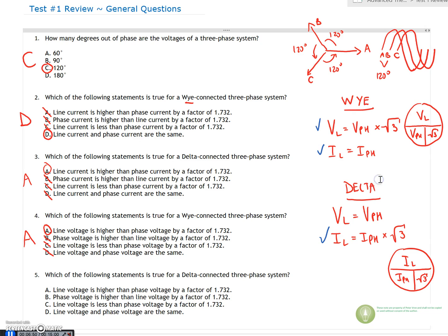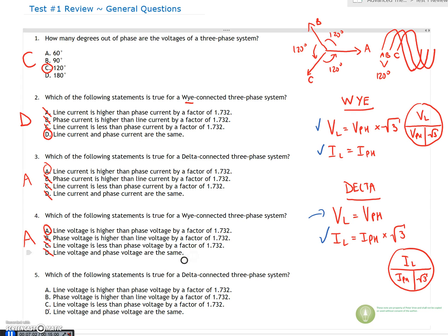The last relationship is for the delta: line voltage and phase voltage are identical. That is right here — line voltage and phase voltage are the same. Line voltage higher than phase voltage is only for the Y circuit, so we eliminate that. B and C are useless as before. So five is answered.